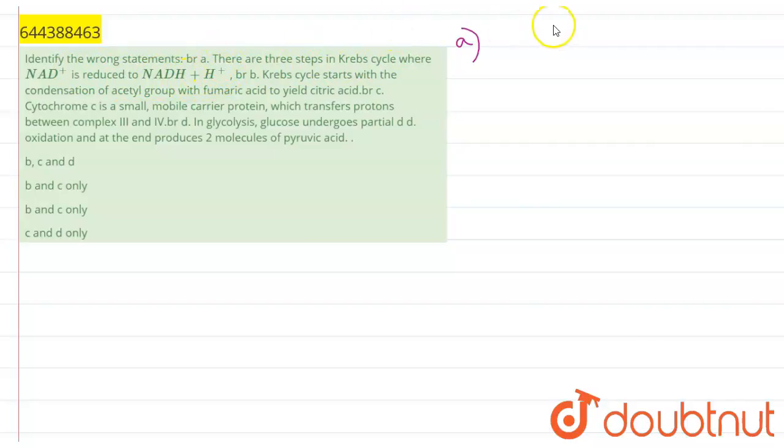We know that Krebs cycle, also known as the citric acid cycle, is a process where ATP is synthesized and cellular respiration takes place. In the Krebs cycle there are various steps, and there are three steps where NAD+, an energy carrier, is reduced to NADH + H+. This happens three times during Krebs cycle, so this is a true or correct statement.